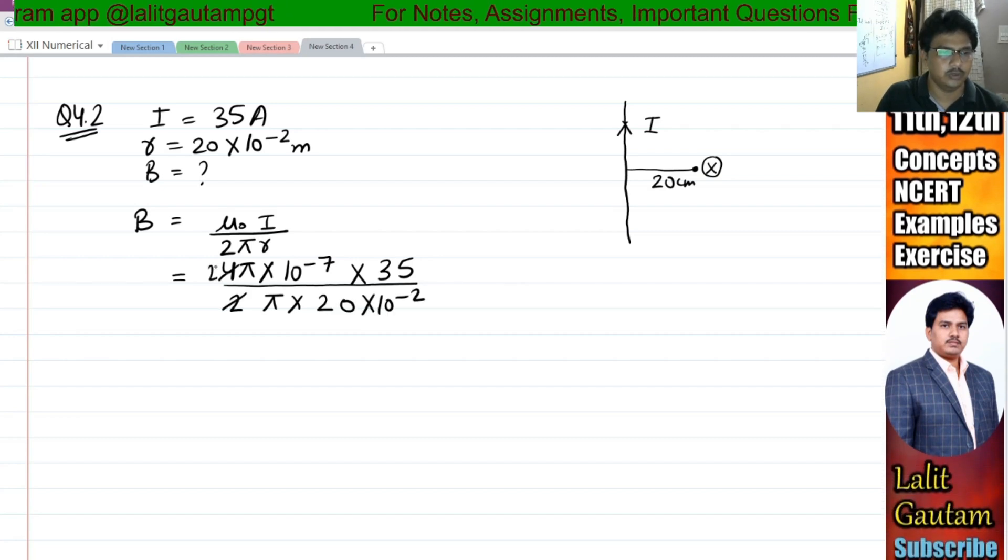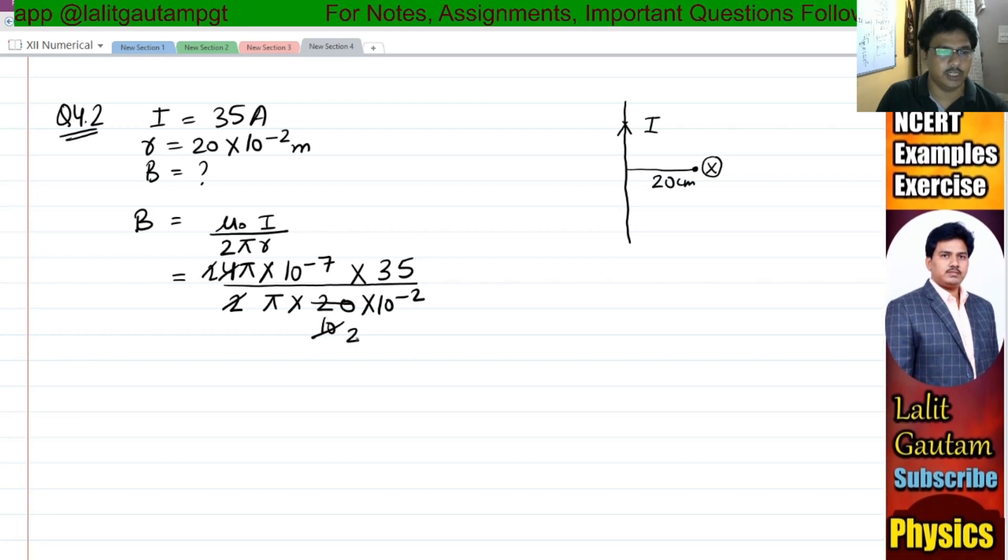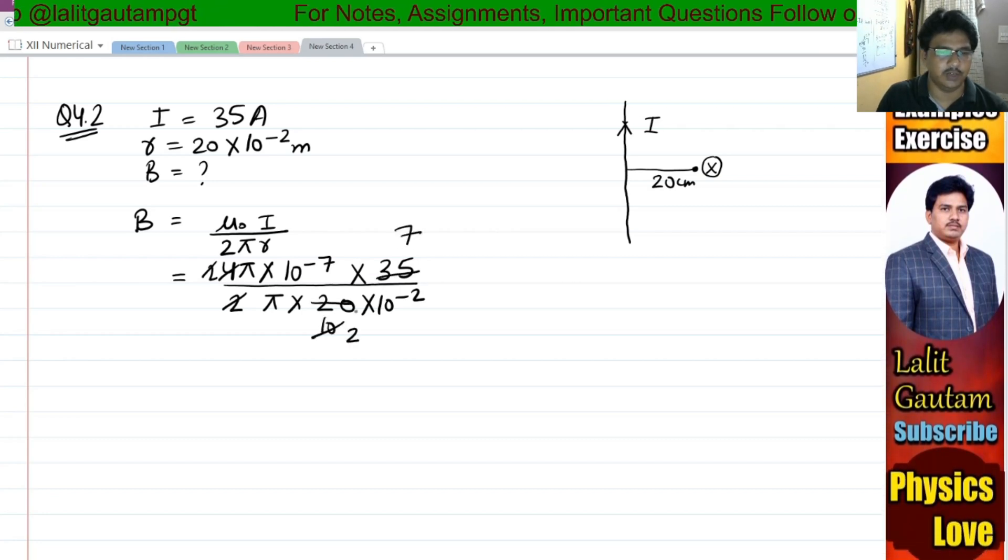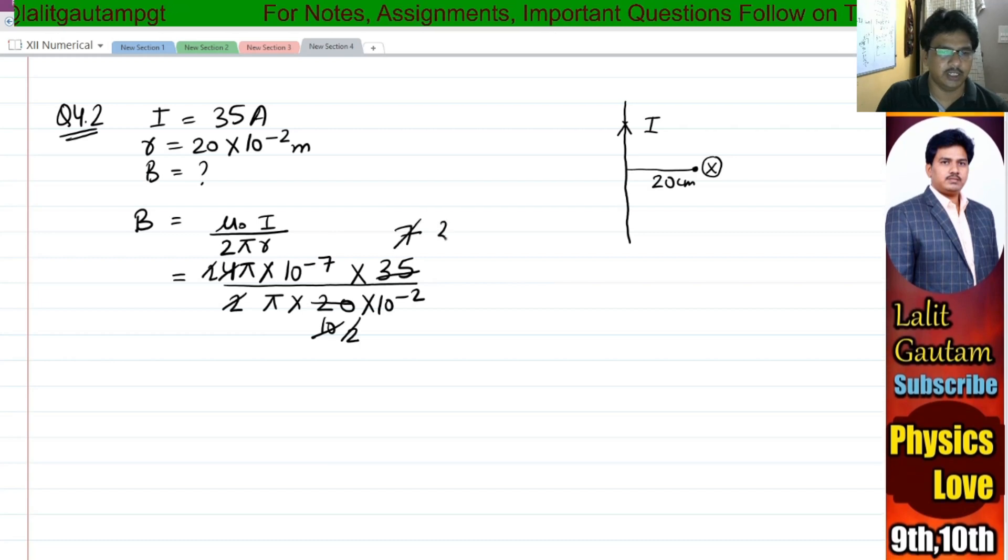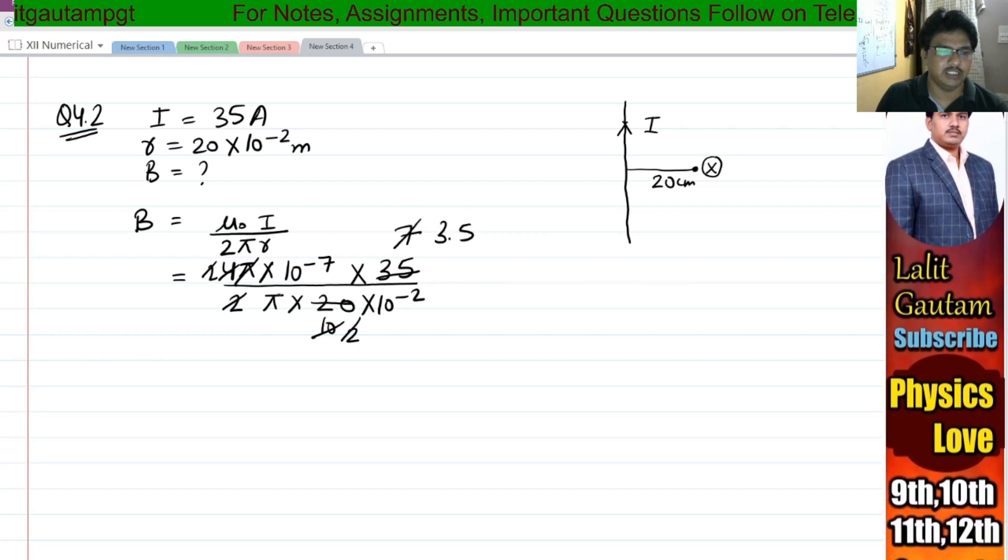2 to the 4, 2 se 10, 5 to the 10, 5, 7 to the 35. Cancel 2 to get 3.5. Pi se pi cancel.